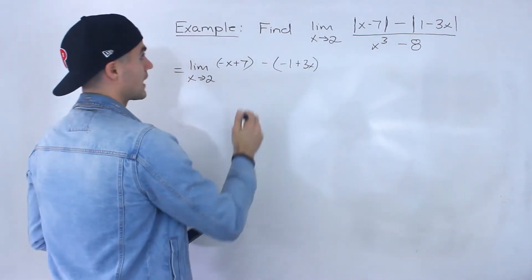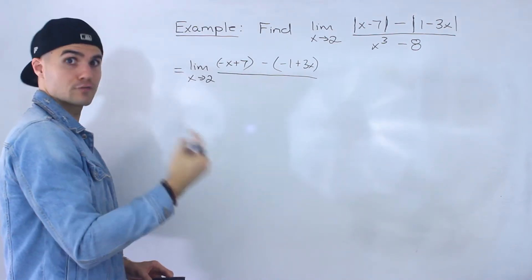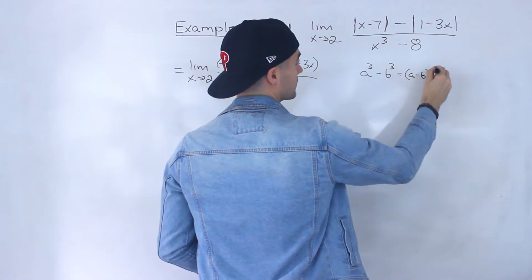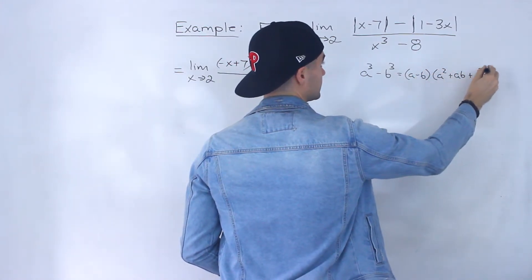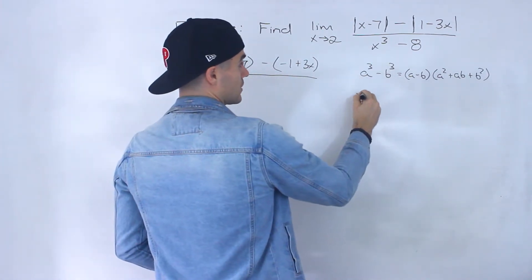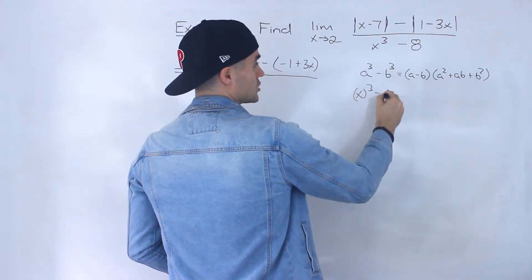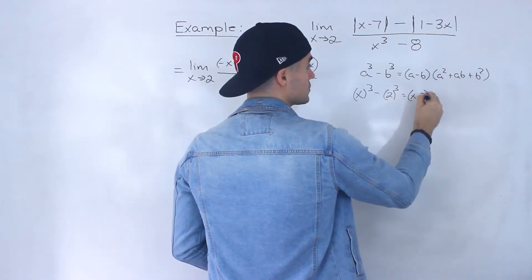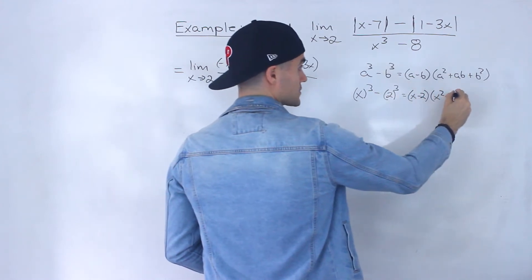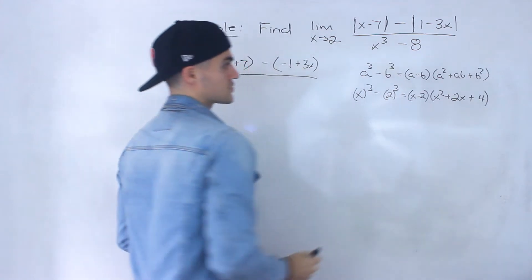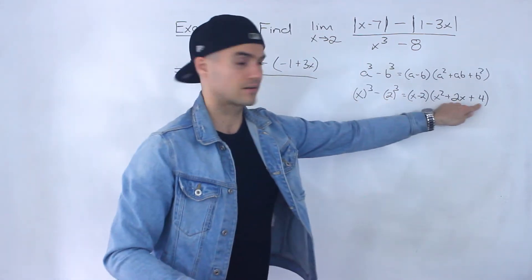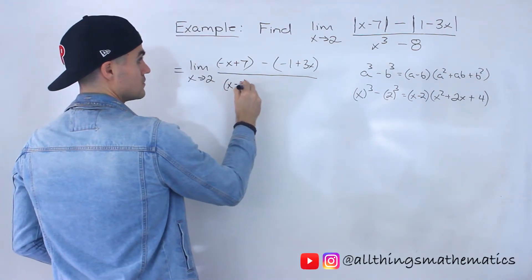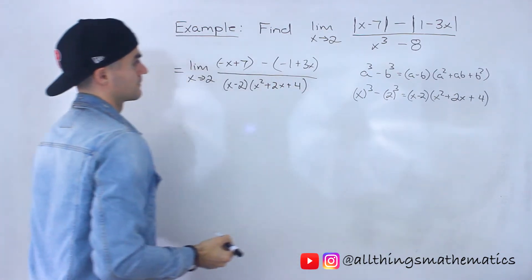Now for the denominator: x to the power of 3 minus 8. That's a difference of cubes. The formula is a³ minus b³ equals (a minus b)(a² plus ab plus b²). Here a equals x and b equals 2, since 8 equals 2³. So x³ minus 8 factors into x minus 2, times x squared plus 2x plus 4. That second bracket can't be factored further with the difference of cubes.